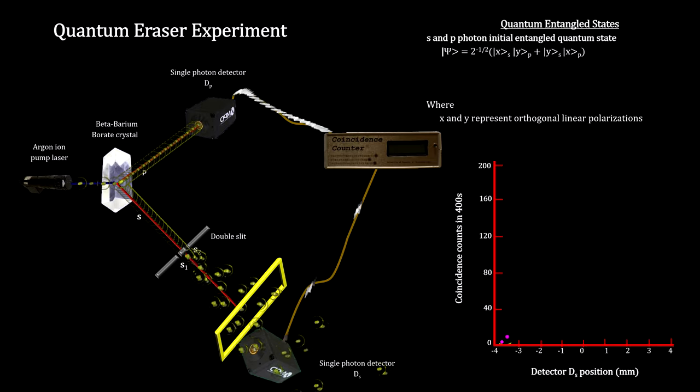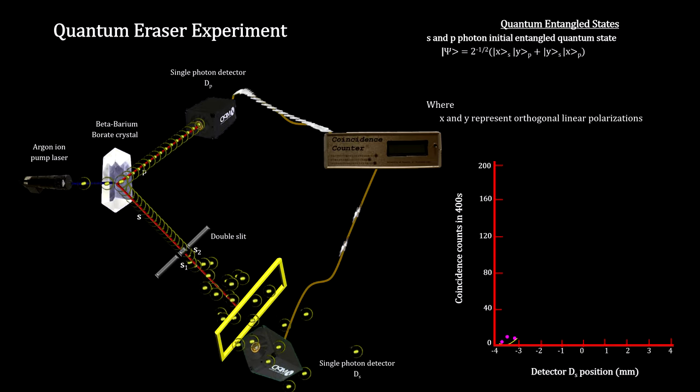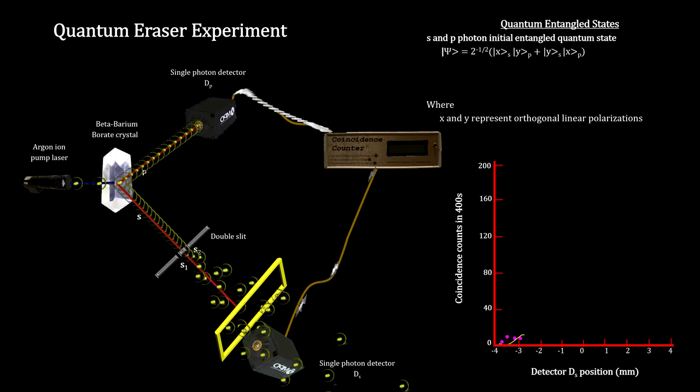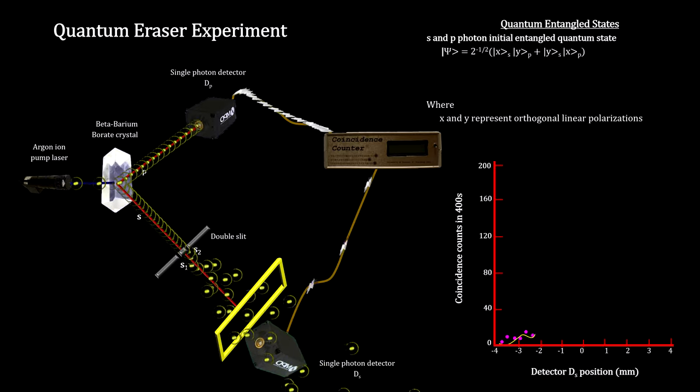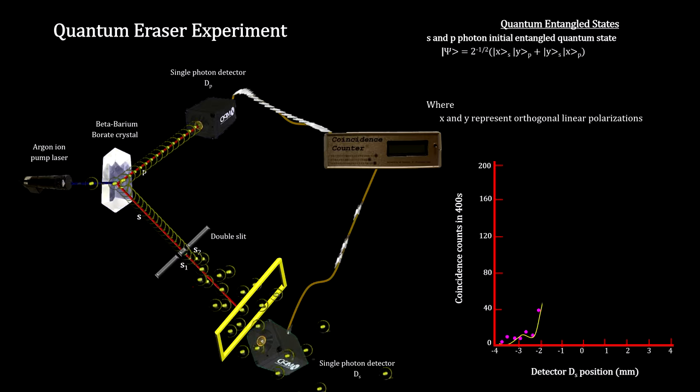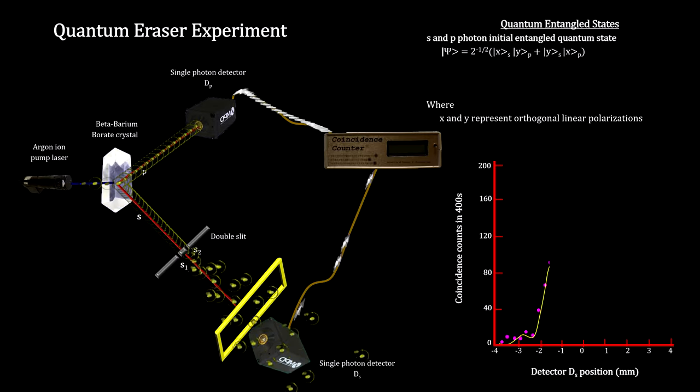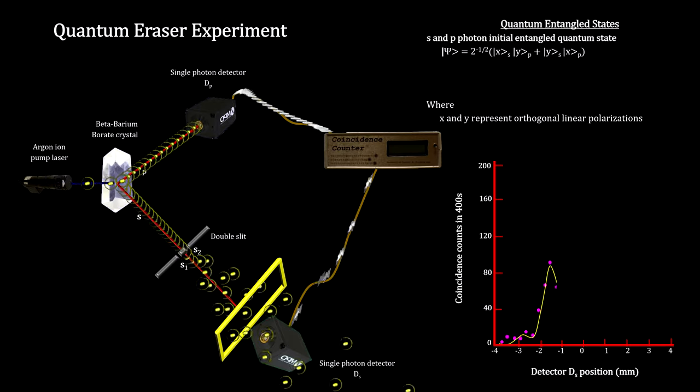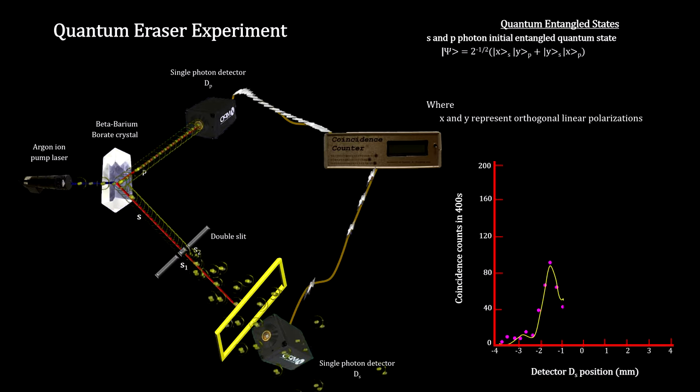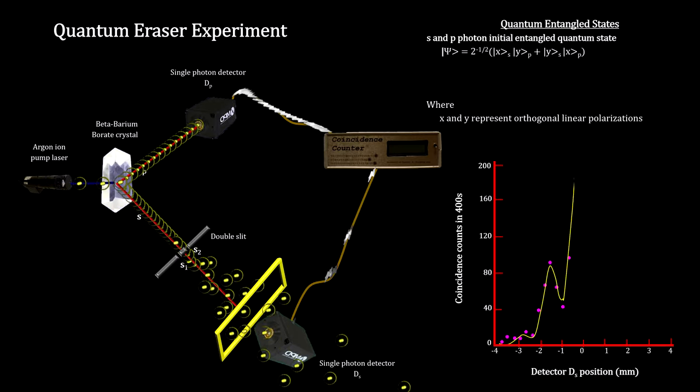This is repeated until the detector has scanned across a region equivalent to the screen in a normal double-slit experiment. The results are displayed by plotting the number of counts as a function of the detector's position. The interference pattern is clearly observed.